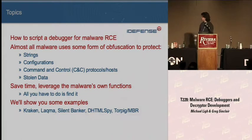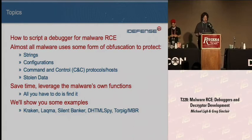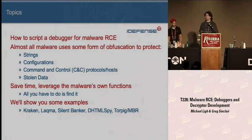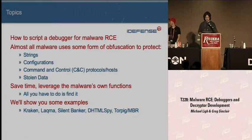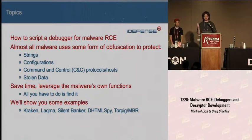Basically what we're going to talk about is how to use a scripting debugger to make your life easier when it comes to reversing malware. As we all know, malware basically obfuscates pretty much everything it can possibly get its hands on, like strings, configurations, protocols, communications back to the C&C, as well as the data that it's stolen. So what we're going to do is use the functions that are already in the malware that are used for encryption and decryption against itself.